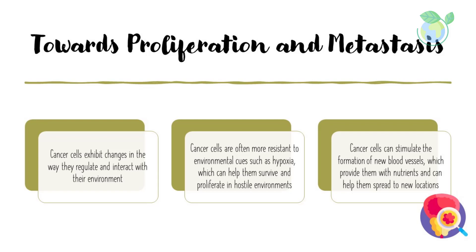Cancer cells also alter the way they interact with other cells in the body. This can involve the production of molecules that promote cell growth and survival or inhibit apoptosis. Cancer cells can also stimulate the formation of new blood vessels, which provide them with nutrients and can help them spread to new locations.